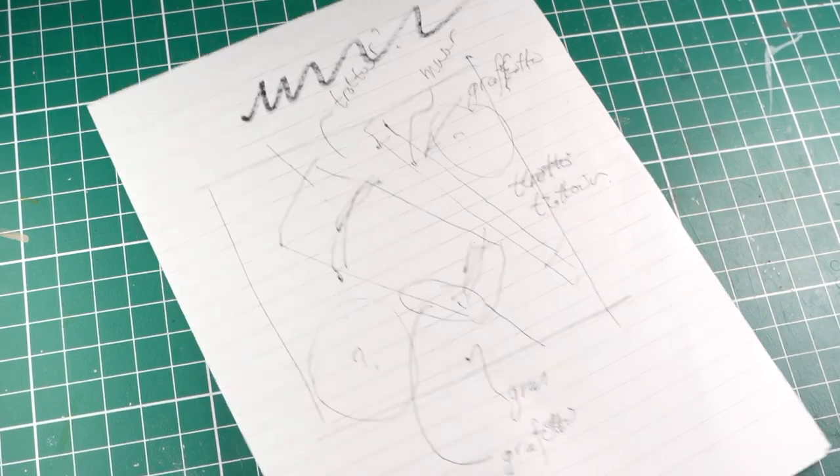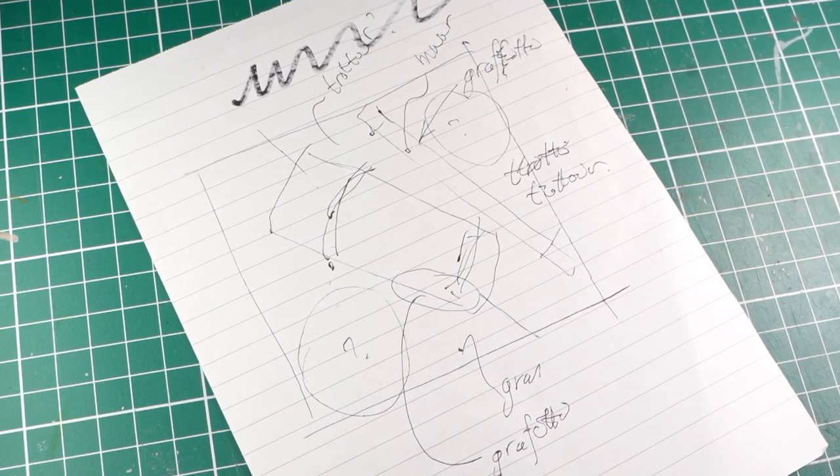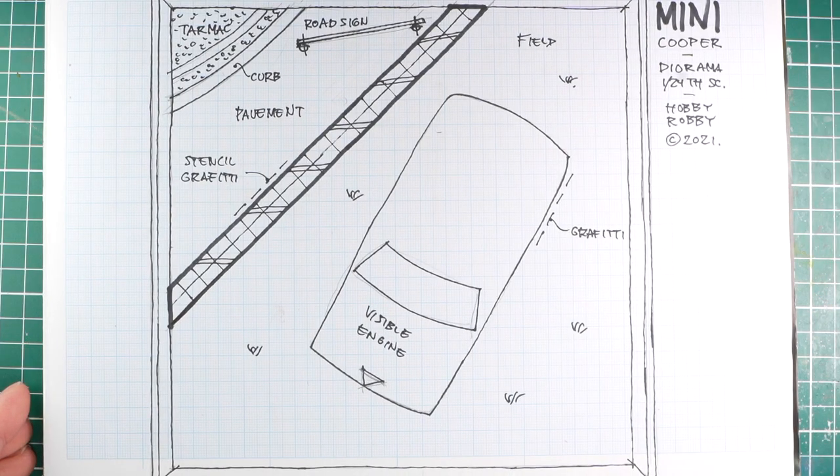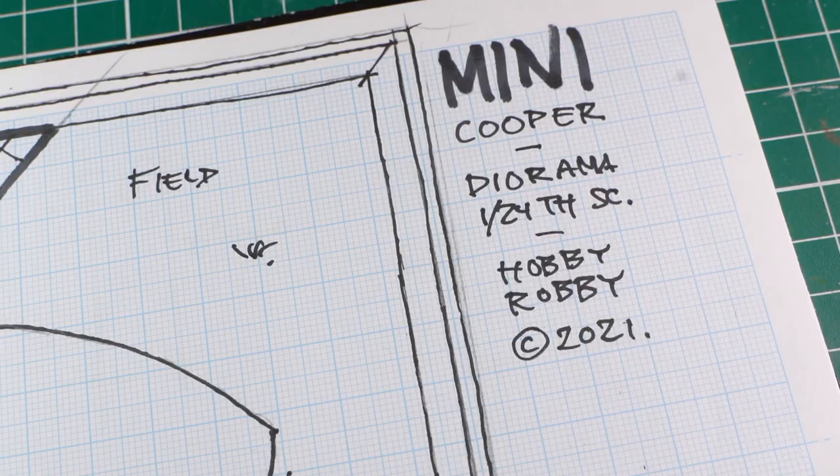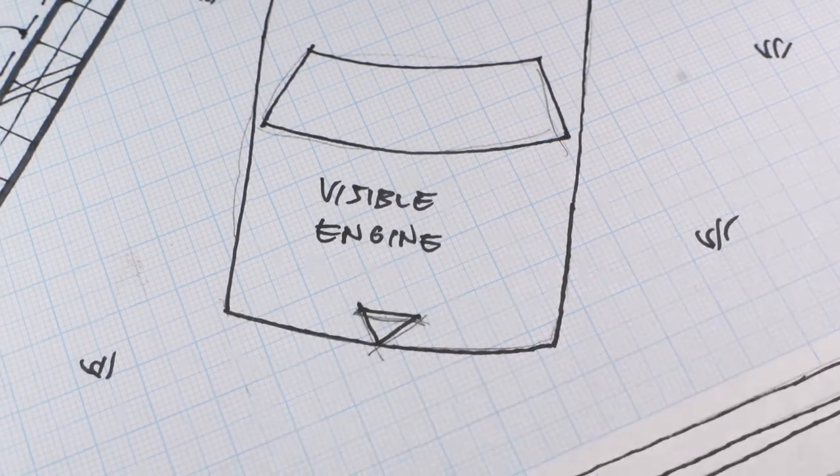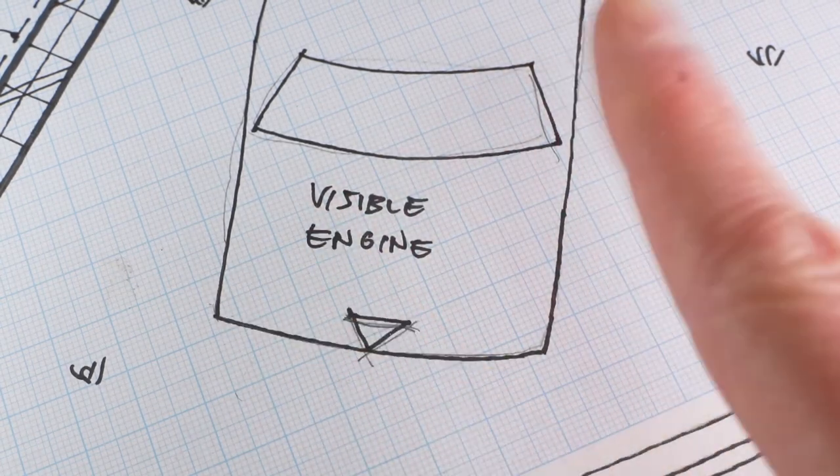I wanted to make a small field, a pavement and road, and a brick wall separating them. After a rough design, a precise one with exact measurements followed, so I would get a feel for the position of each part.